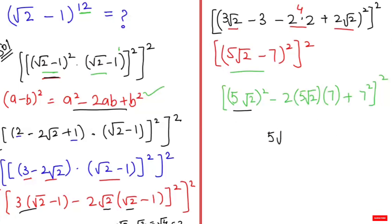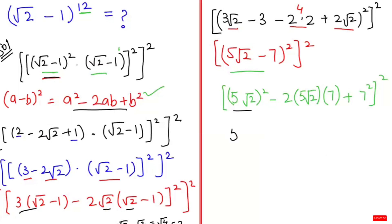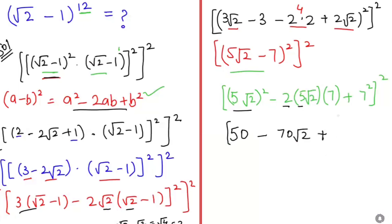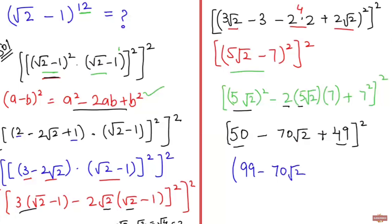Now I'm going to solve this. Here (5√2)² gives 25 × 2 = 50. Then 2 × 5 × 7 = 70, giving 70√2. And 7² = 49. So we get 50 - 70√2 + 49, to the power of 2. Combining 50 and 49 gives 99, so this equals (99 - 70√2)².